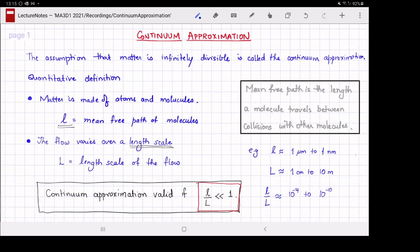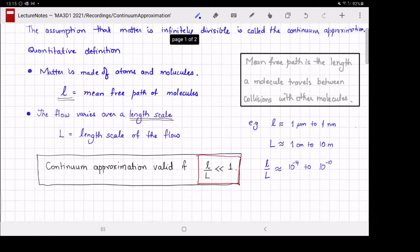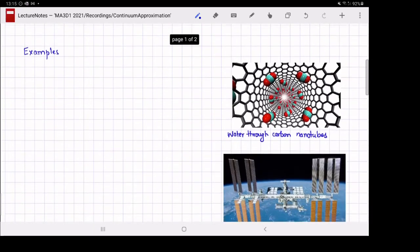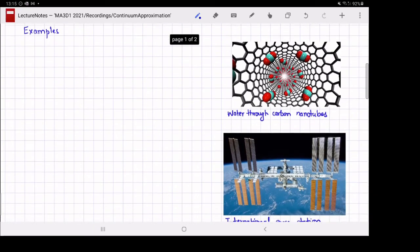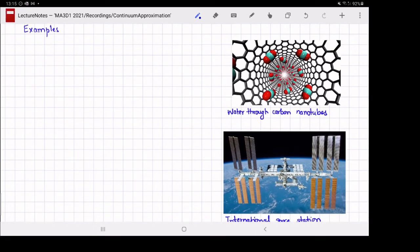As you can see, these are extremely small numbers, and we take continuum approximation to be a valid approximation for the flow. Let's look at two examples where continuum approximation would not be valid as a way to build our intuition. The first example is water flowing through carbon nanotubes.